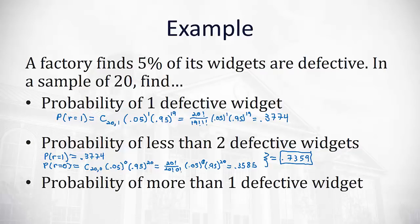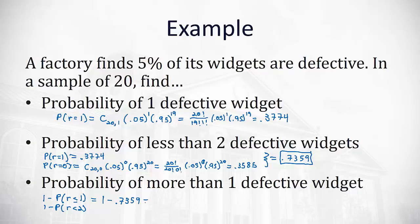What if I want the probability of more than one defective widget? More than one means the probability of 2 plus 3 plus 4 all the way up to 20 — that's a lot of work to calculate manually. So we calculate the complement: 1 minus the probability of r being less than or equal to 1, which is the same as r less than 2. We just calculated that, so we use 1 minus 0.7359, which gives us a probability of 0.2641 — just over a 26% chance that there is more than one defective widget out of 20.